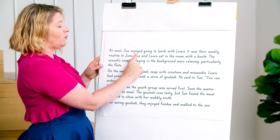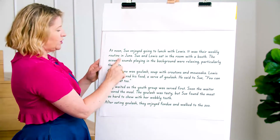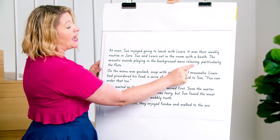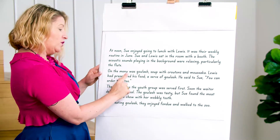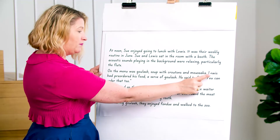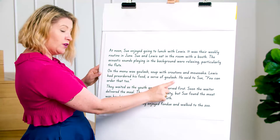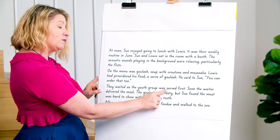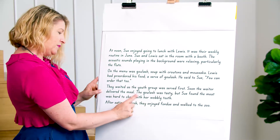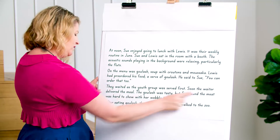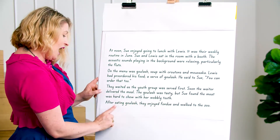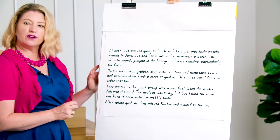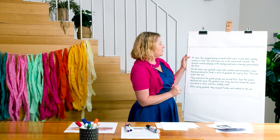At noon, Sue enjoyed going to lunch with Lewis. It was their weekly routine in June. Sue and Lewis sat in the room with a booth. The acoustic sounds playing in the background were relaxing, particularly the flute. On the menu was goulash, soup with croutons, and moussaka. Lewis had pre-ordered his food, a serve of goulash. He said to Sue, you can order that too. They waited as the youth group was served first. Soon the waiter delivered the meal. The goulash was tasty, but Sue found the meat was hard to chew with her wobbly tooth. After eating goulash, they enjoyed fondue and walked to the zoo. Sounds like a nice lunch — at noon, 12 o'clock, middle of the day, is noon.